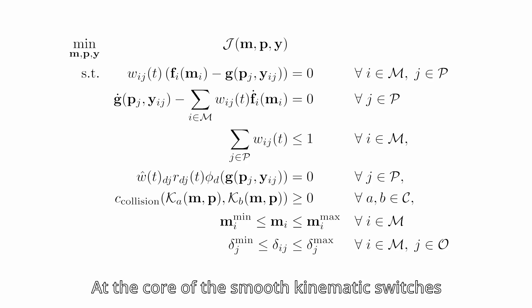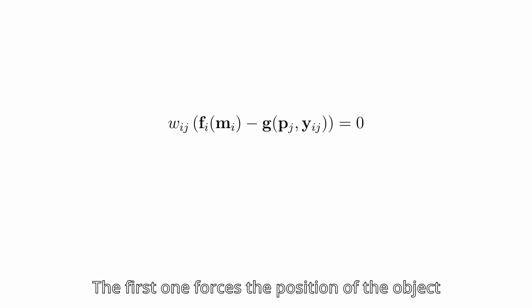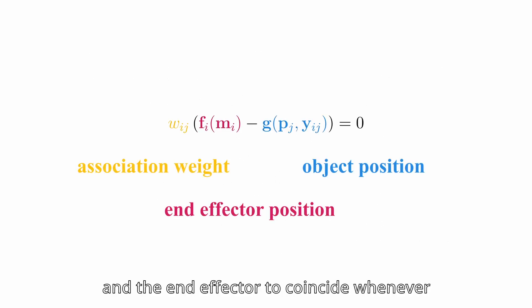At the core of the smooth kinematic switches are two constraints. The first one forces the position of the object and the end effector to coincide whenever the weight has a non-zero value.